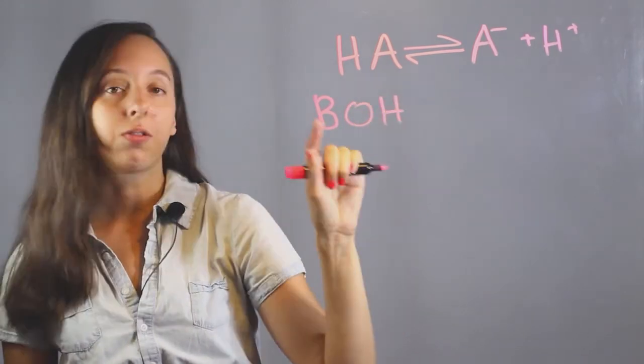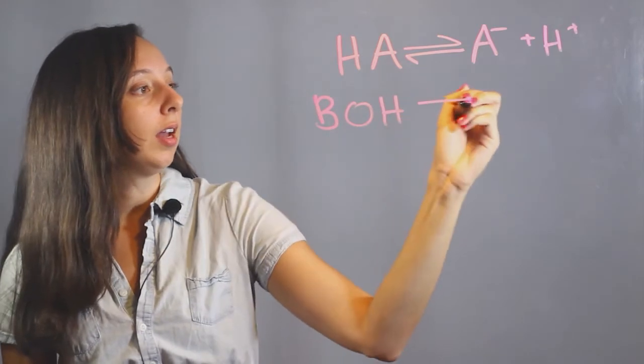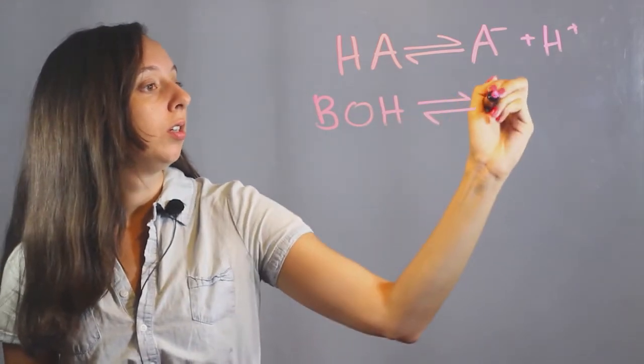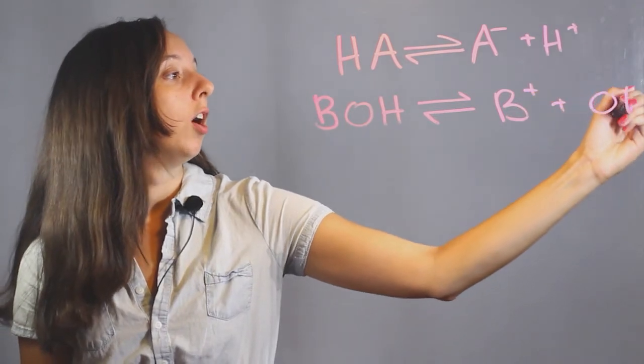And so our general reaction for bases is that we have BOH, general base, and then our OH, our hydroxide here, and it will disassociate in solution to B+, plus OH-.